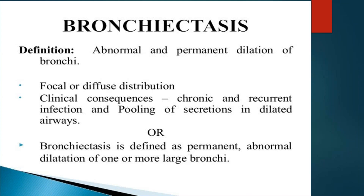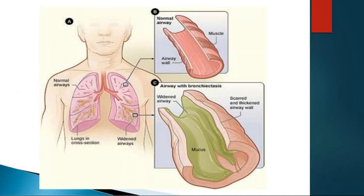Coming to the definition, bronchiectasis is an abnormal and permanent dilatation of the bronchi. It can be focal or diffuse. The picture shows a normal airway compared to an airway in patients with bronchiectasis, where the airway is widened, there is obstruction with mucus plugs, and there is scarring and thickening of the airway wall.